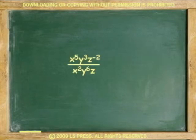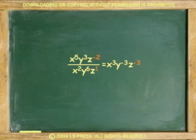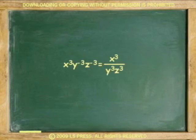Another example. Divide this monomials. The x's 5 minus 2 equals 3. The y's 3 minus 6 equals negative 3. The z's negative 2 minus 1 equals negative 3. Now, make negative exponents positive on the reciprocal. The y's and the z's turn out positive in the denominator.